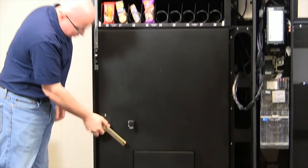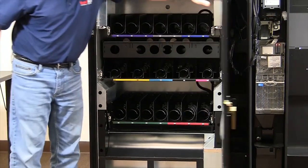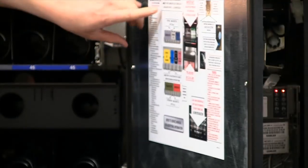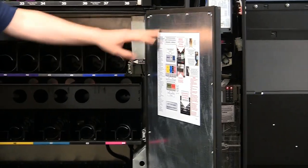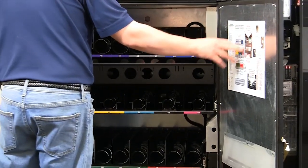Open the refrigeration inner door to access the cold drink loading areas by pushing down on the lever. Reference the diagram on the interior of the door for loading cans and bottles.